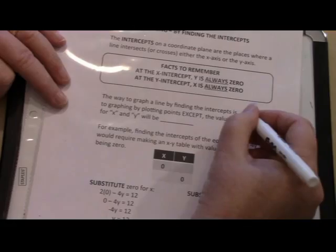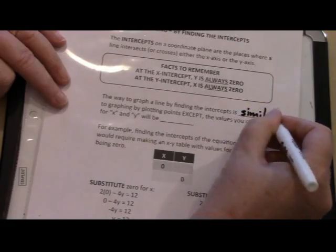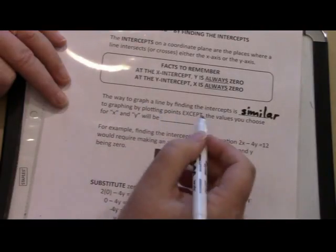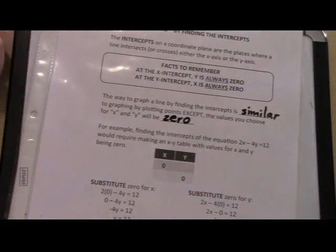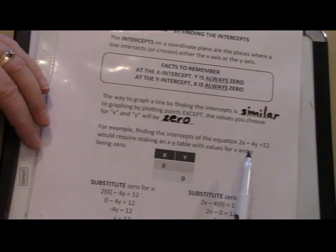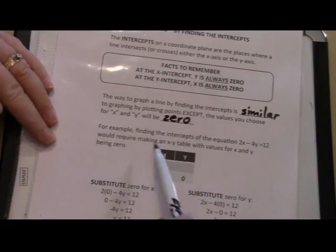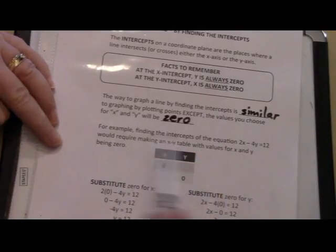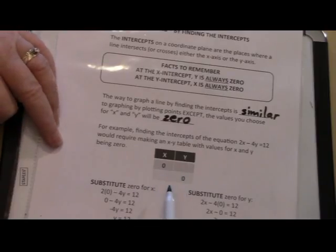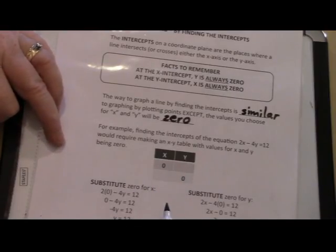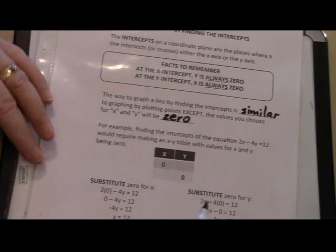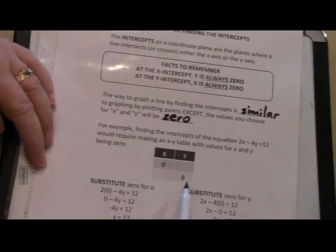The way to graph a line by finding the intercepts is similar to graphing by plotting points, except the values that you will choose in your x-y table will be 0. For example, finding the intercepts of the equation 2x minus 4y equals 12 would require making the x-y table with values for x and y being 0. It looks like this. This table is exactly what we did in an earlier lesson, but now we're choosing specifically 0 for our points.